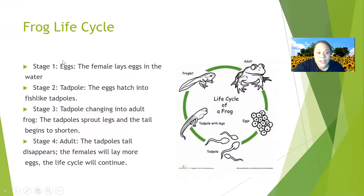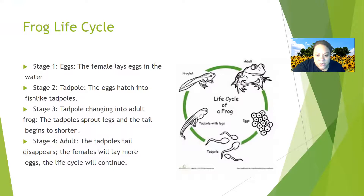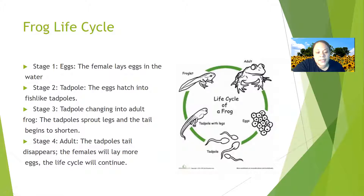Let's dive deep into the frog life cycle. Stage one: the eggs — the female lays eggs in the water. Stage two: the tadpole — the eggs hatch into fish-like tadpoles. Stage three: the tadpole changes into an adult frog — the tadpoles sprout legs and the tail begins to shorten. Stage four: the adult — the tadpole's tail disappears, the females lay more eggs, and the life cycle continues.